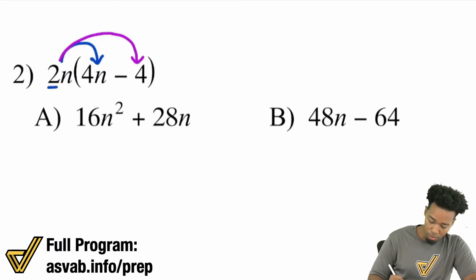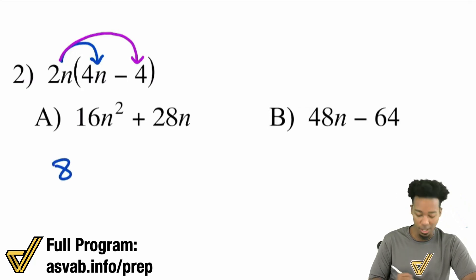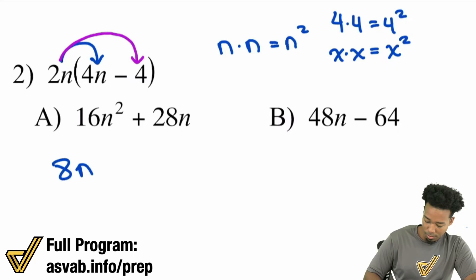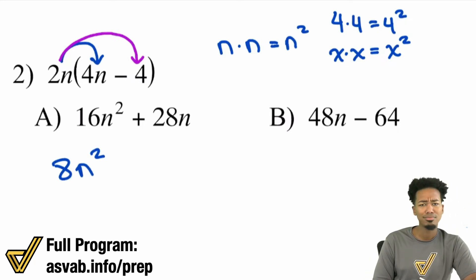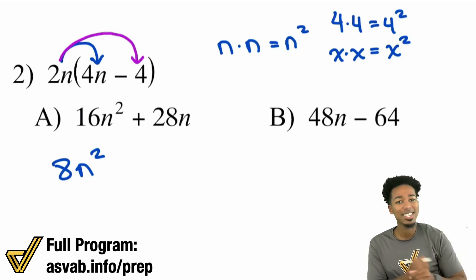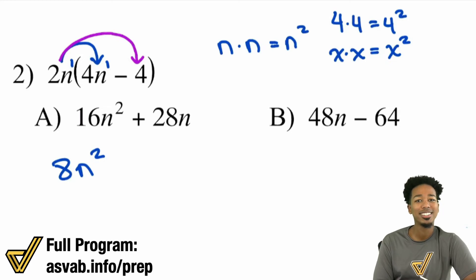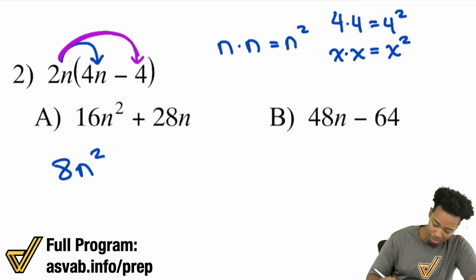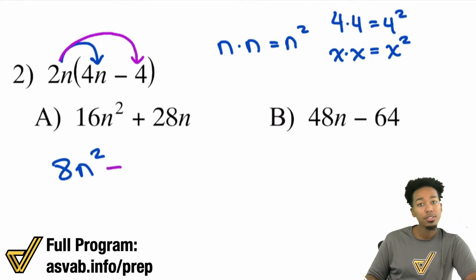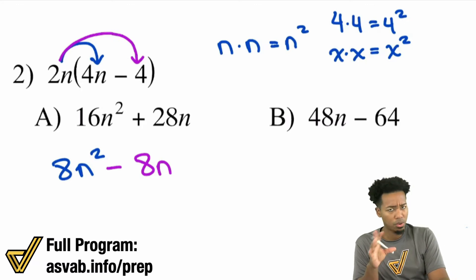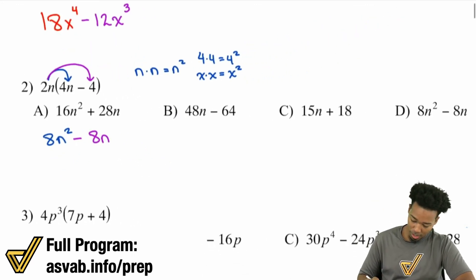First, take care of just the numbers: two times four is eight. Then multiply the variables: N times N. Just like X times X is X squared, N times N is N squared. So you get eight N squared. You can also see it as each N having an exponent of one, and one plus one is two — N squared. Next: two N times negative four. Positive times negative is negative, two times four is eight, and the N stays. So we get negative eight N. The answer is D.